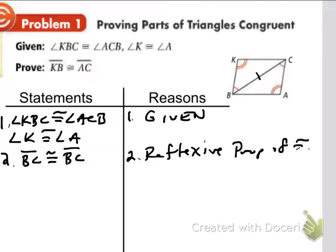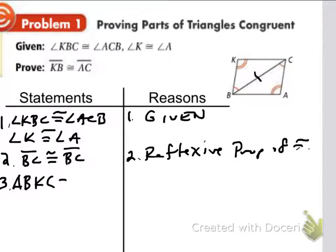Now I'm ready to show that these triangles are congruent by angle-angle-side. We're going to say that triangle BKC is congruent to triangle CAB. I said BKC — going from the one arc to the two arc to the no arc — so I've got to do the same thing for the other triangle, giving me triangle CAB. They are congruent by angle-angle-side.